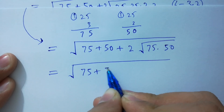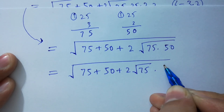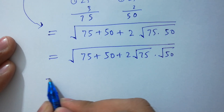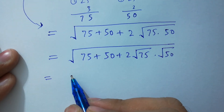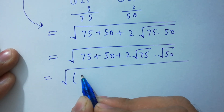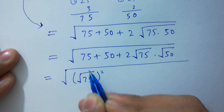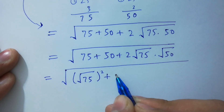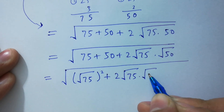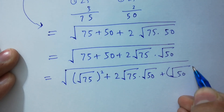We now have 75 plus 50 plus 2 times square root of 75 times square root of 50. Isolating this, it is the same as square root of 75 squared — the square cancels from the square root and we get 75 — plus 2 times square root of 75 times square root of 50.